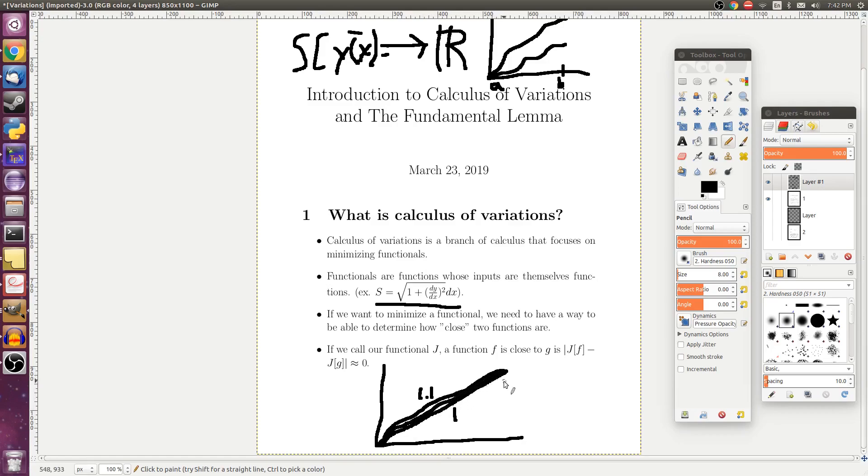But the idea is that if you want to find how close two functions are, you just apply that functional. So for each of these lines, you would compute their arc length integral, and then compare that number that got spit out. Because any functional is going to output a real number. So you can always determine if two functions are close by looking at the output of their functionals.